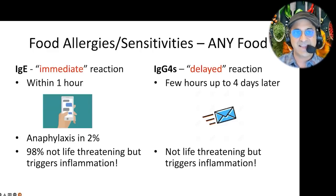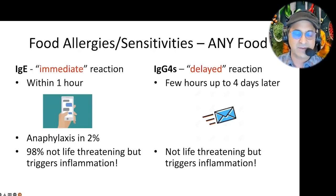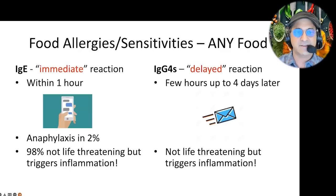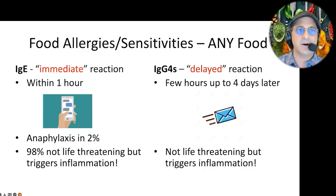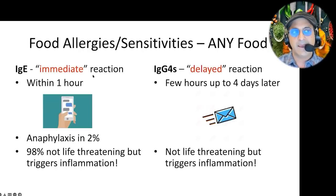Food sensitivities are something I specifically specialize in. I was someone who had a very severe food sensitivity reaction. Since I was a child I'm one of the peanut kids — I have a severe anaphylactic reaction to peanuts. I also had a strong delayed reaction to a food I was eating all the time that caused chronic eczema for decades. We now know there are two types of reactions from eating a food. We have IgE — I say E for immediate — meaning within an hour you're getting a reaction.